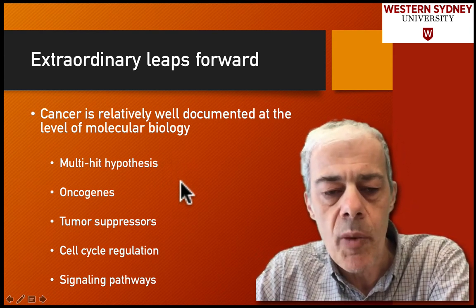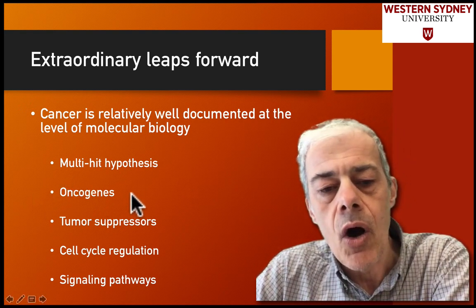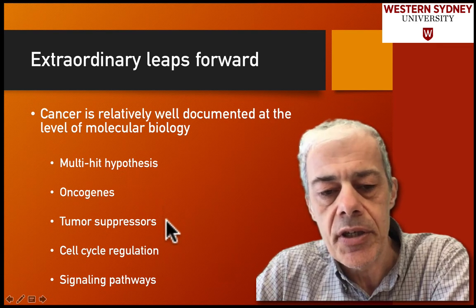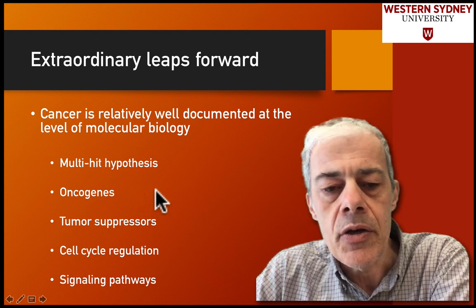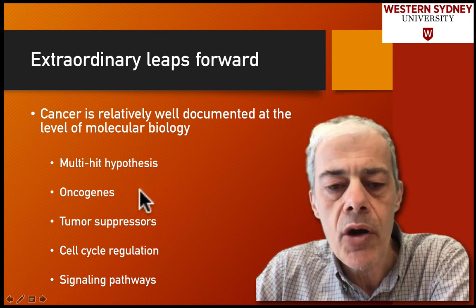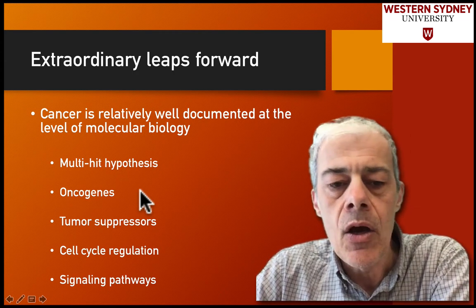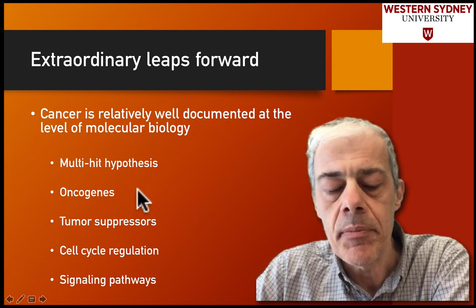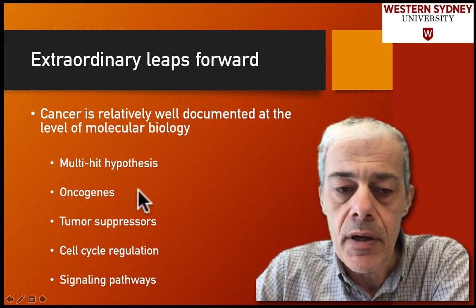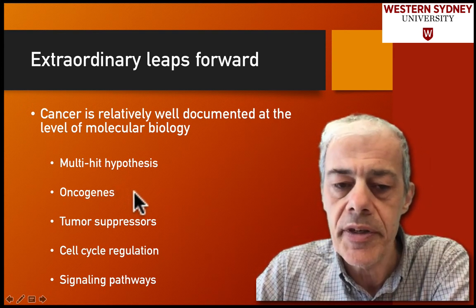One more comment before moving on: when considering oncogenes and tumor suppressor genes, with oncogenes you can have a mutation in only one of the two alleles. Only one allele needs to be mutated if it's a hyperactive mutation, because the mutant allele is dominant over the normal allele — so a mutation in one copy dominates.